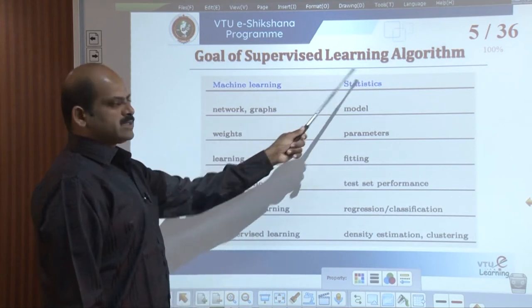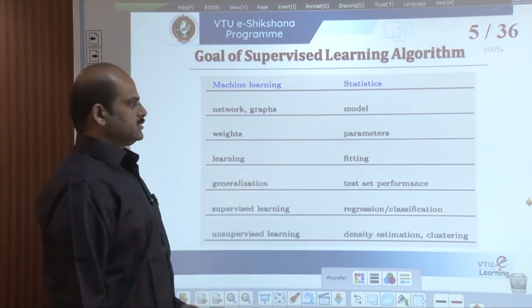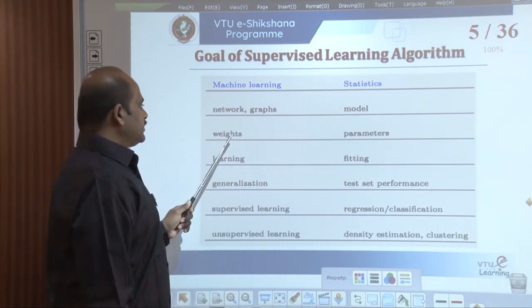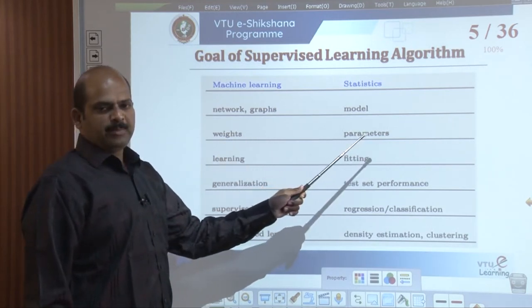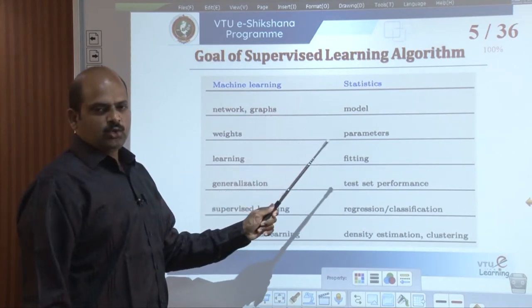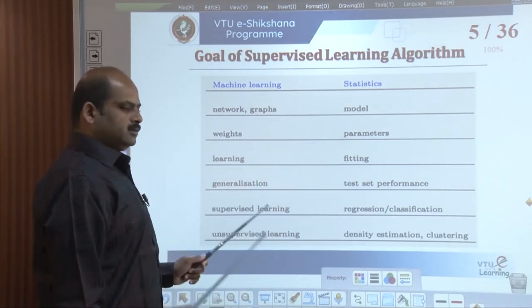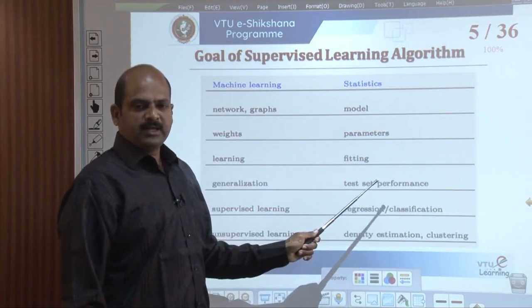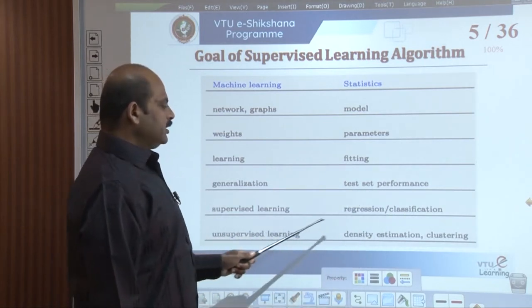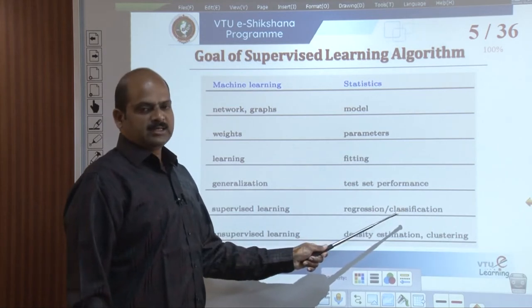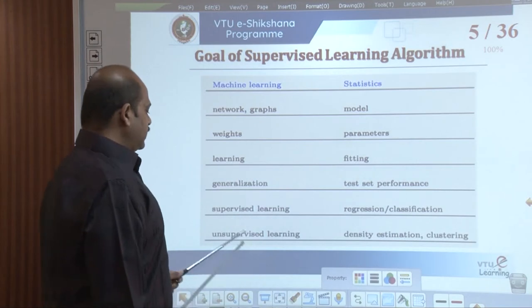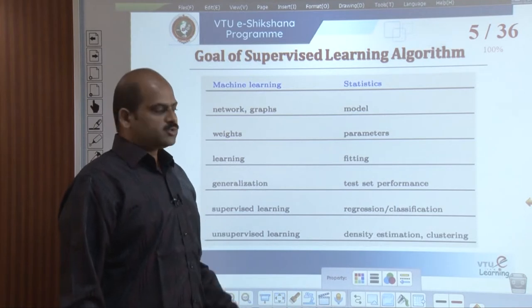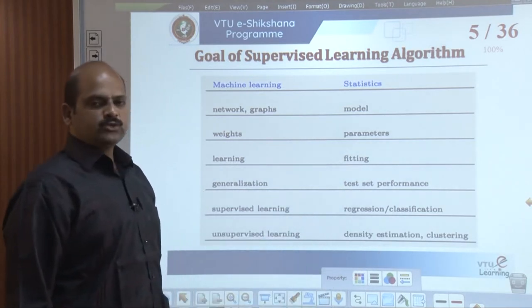In the context of machine learning and statistics: machine learning may be a network or graph; statistics takes a model; weights are parameters. Learning is essentially fitting, and generalization is test-set performance. Supervised learning involves regression or classification, while unsupervised learning covers density estimation or clustering.